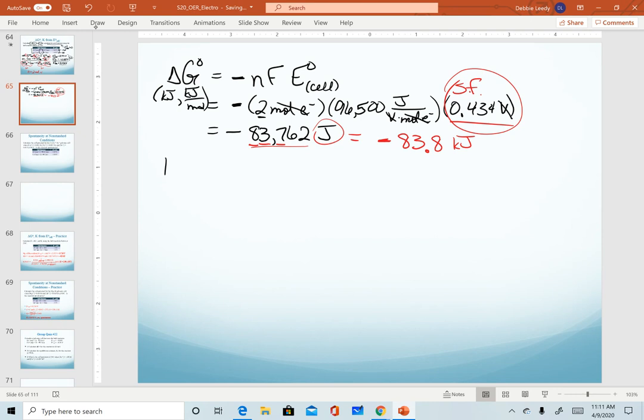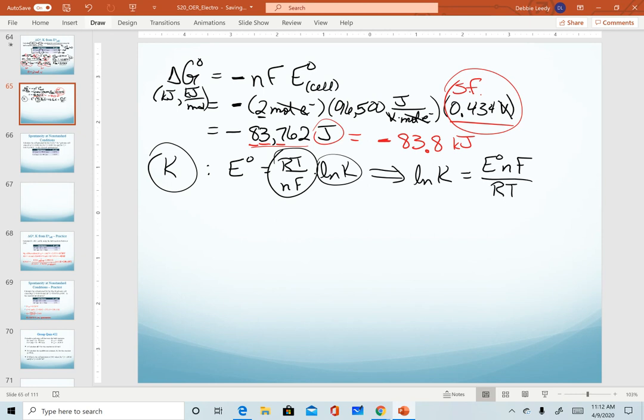For the last step in this set of calculations, we are asked to find K. Looking at our equation sheet, the equation that will allow us to calculate K is our standard cell potential equal to RT over nF times the ln of K. As always with equations like this, I prefer to isolate as much as I can. So if I solve for the ln of K, I'm going to move this quantity to the other side multiplied by the reciprocal. So my standard cell potential times n times F over R times T.